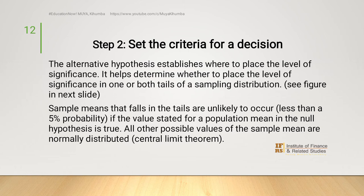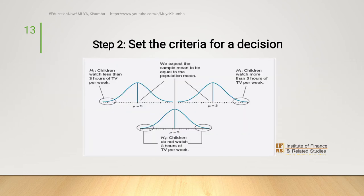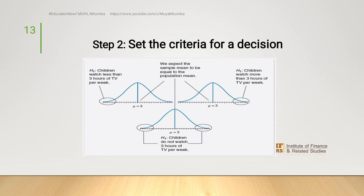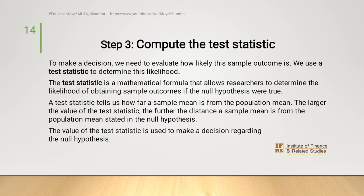Now, if we look at this figure, we have two tails. On the one on our left, we have children watching TV less than three hours per week — that is the alternative. And on the other side, children watching more than three hours. Because we are uncertain about the direction, we've taken the middle position: children do not watch TV for three hours in a week.